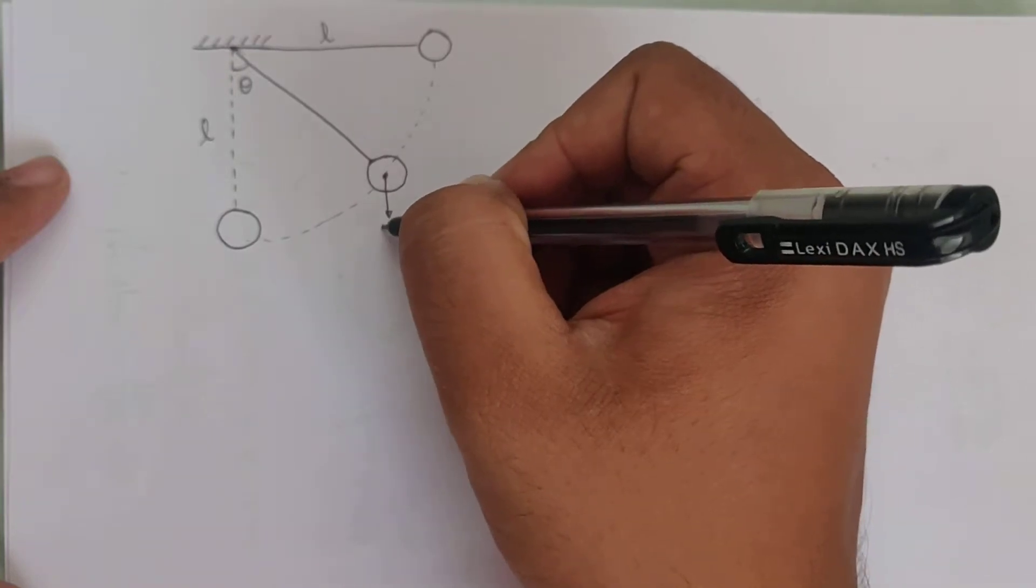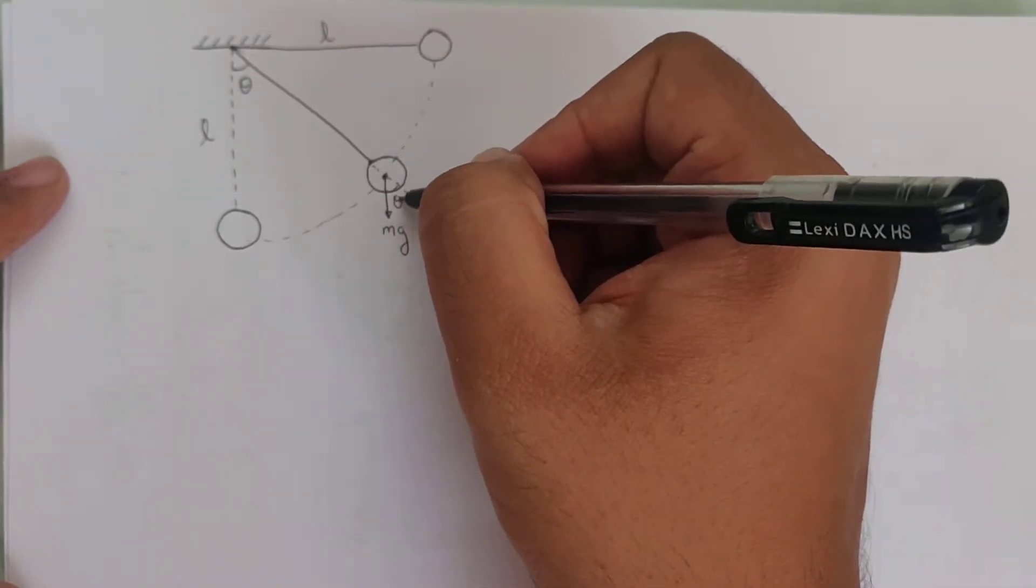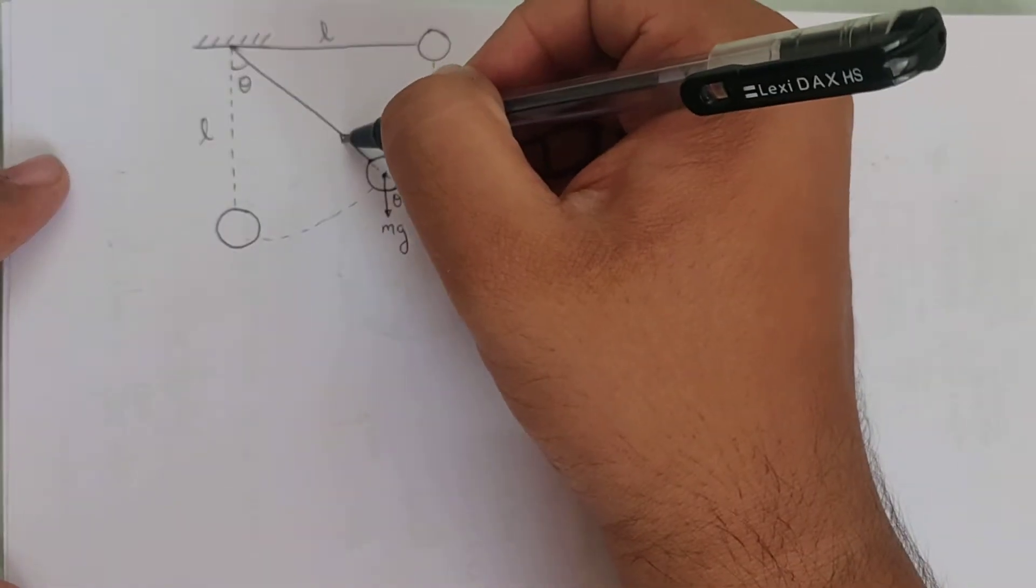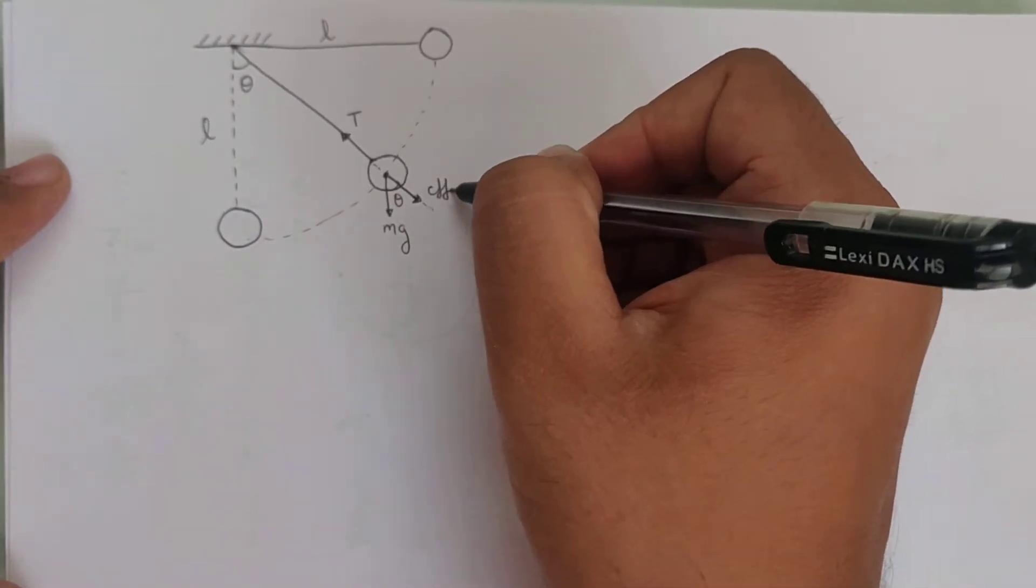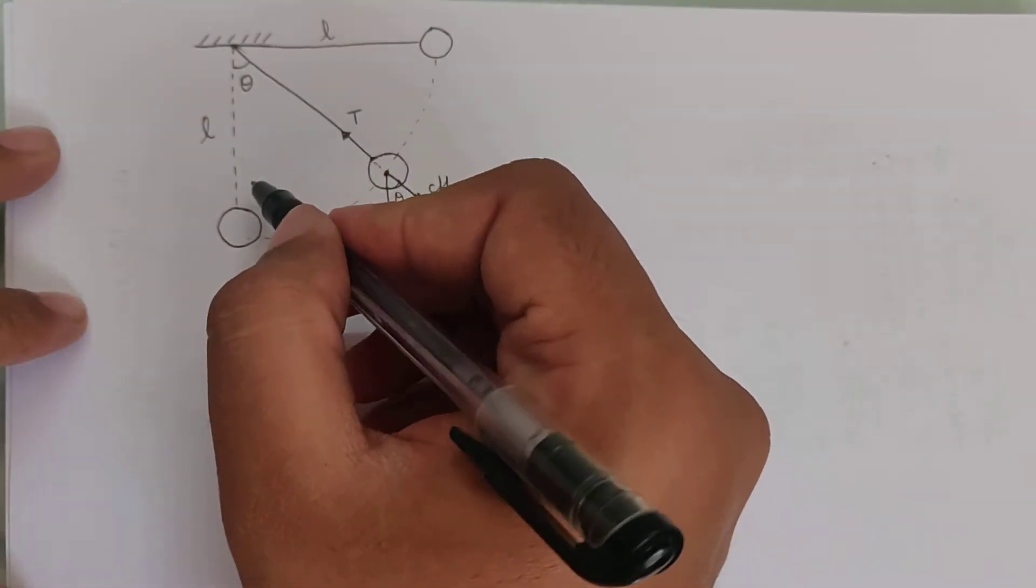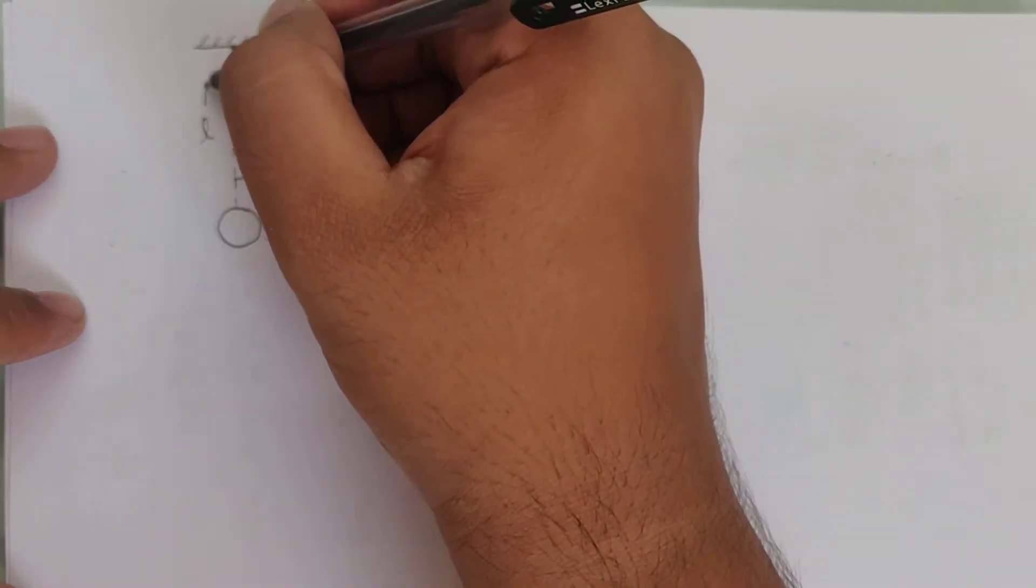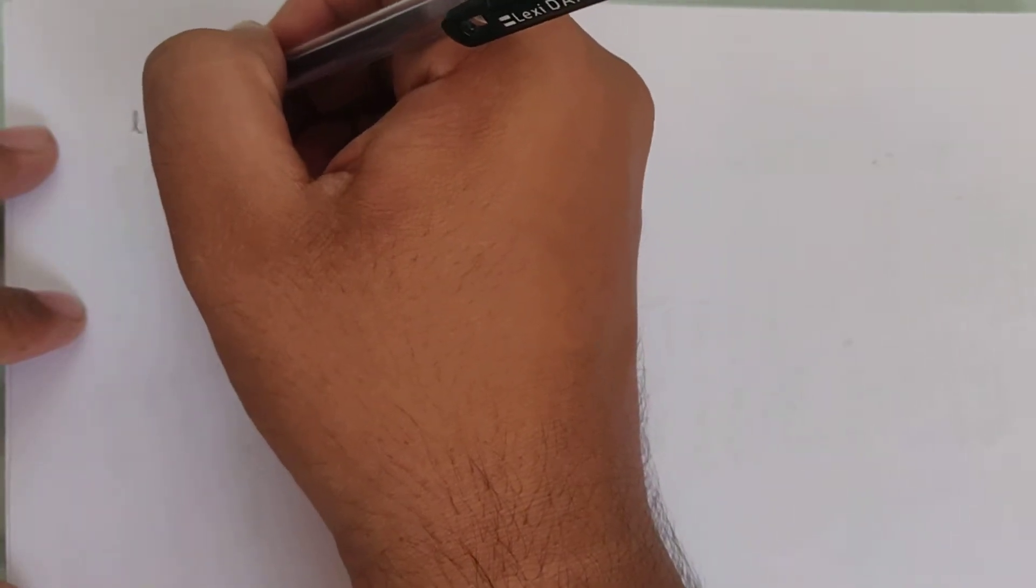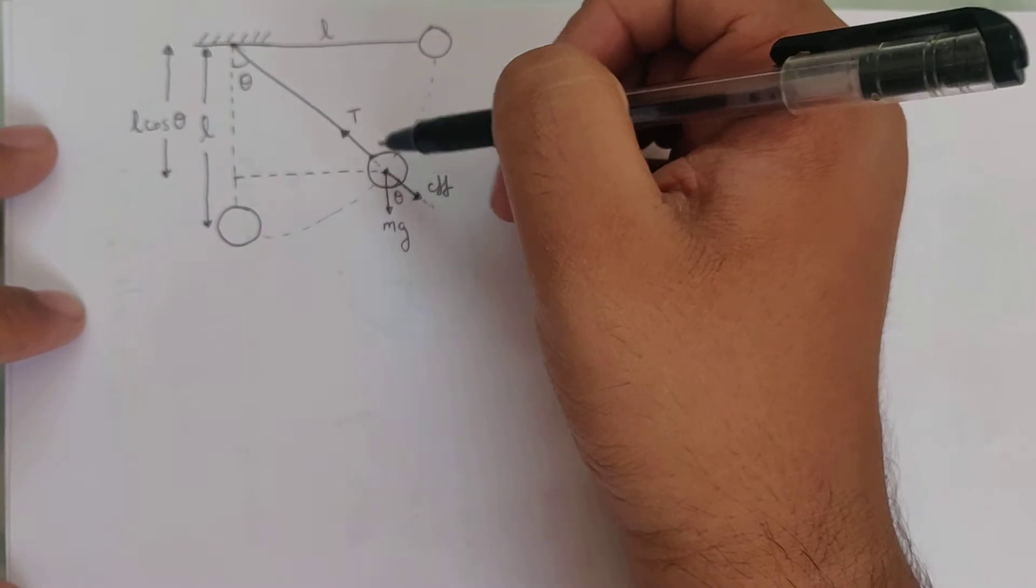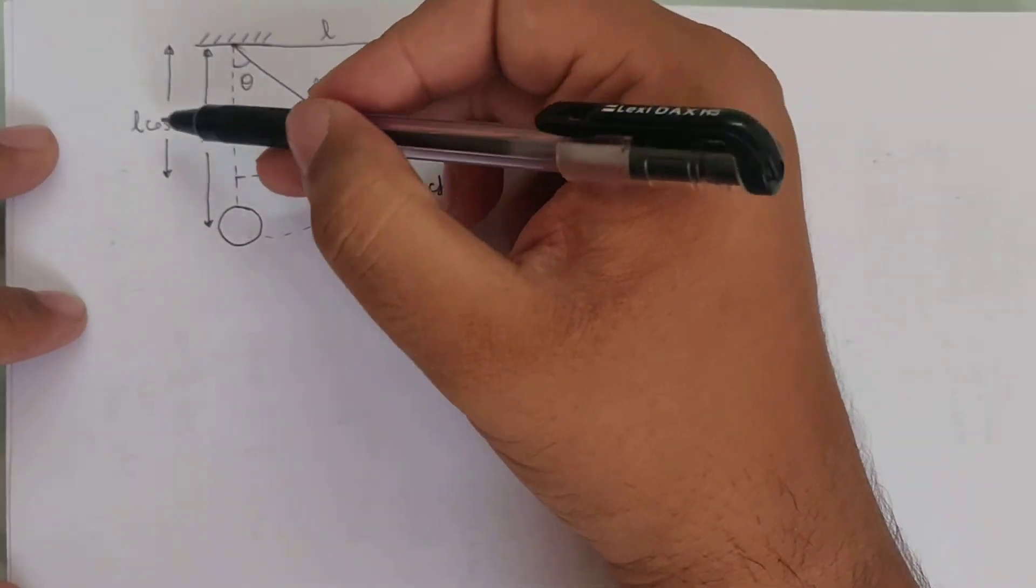Now here the weight is mg in this direction which, if you extend the string length, you get the angle as theta. There is tension acting in string and the centrifugal force acting on the bob which is away from it. I'm drawing this line to indicate that this length is L, and this length is going to be L cos theta. From this triangle, the hypotenuse is L and the side adjacent is L cos theta.